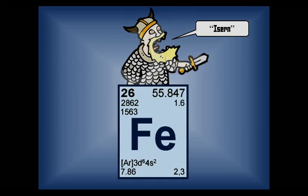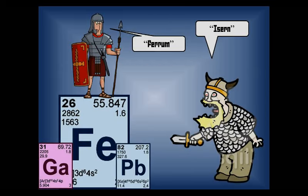Iron comes from the Anglo-Saxon word icern, meaning a strong metal. The Fe symbol comes from the Latin word for iron, ferrum.